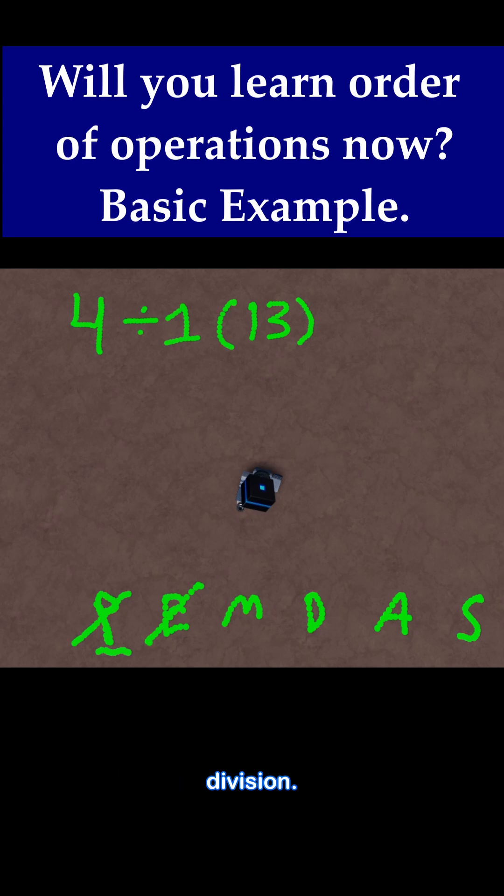Next is multiplication and division. Now be careful. PEMDAS implies that multiplication happens before division because we write it as M first and then D. However, what you really need to understand is that with PEMDAS, multiplication and division can actually happen in either order.